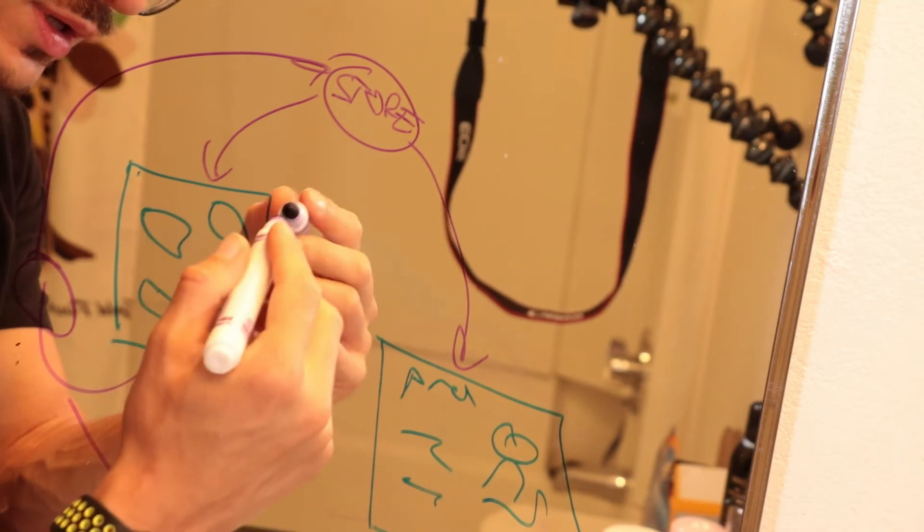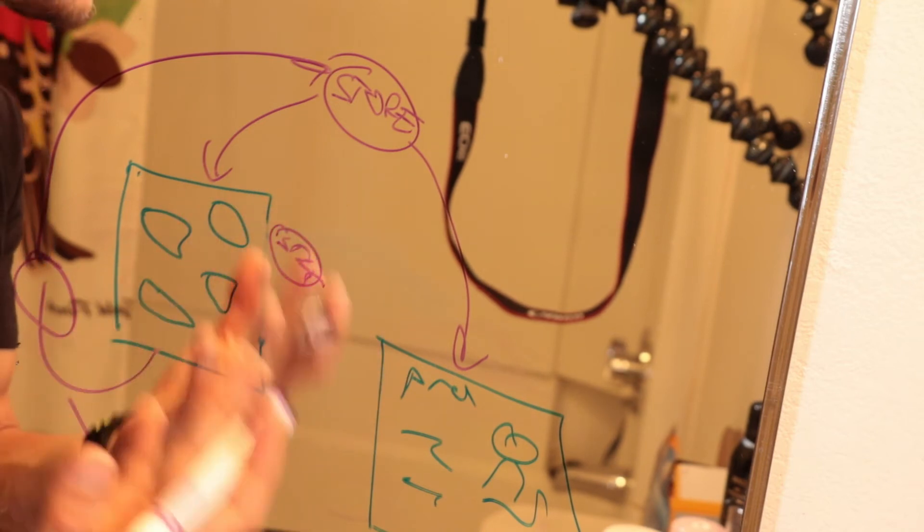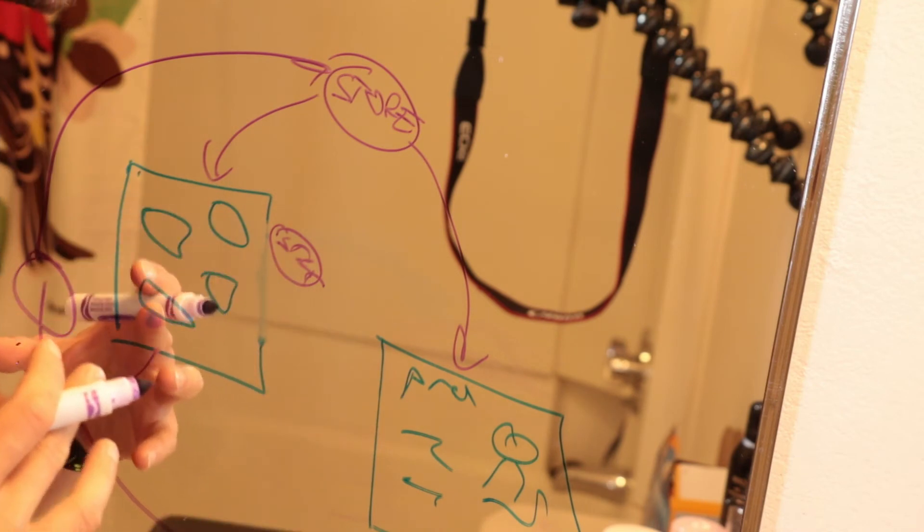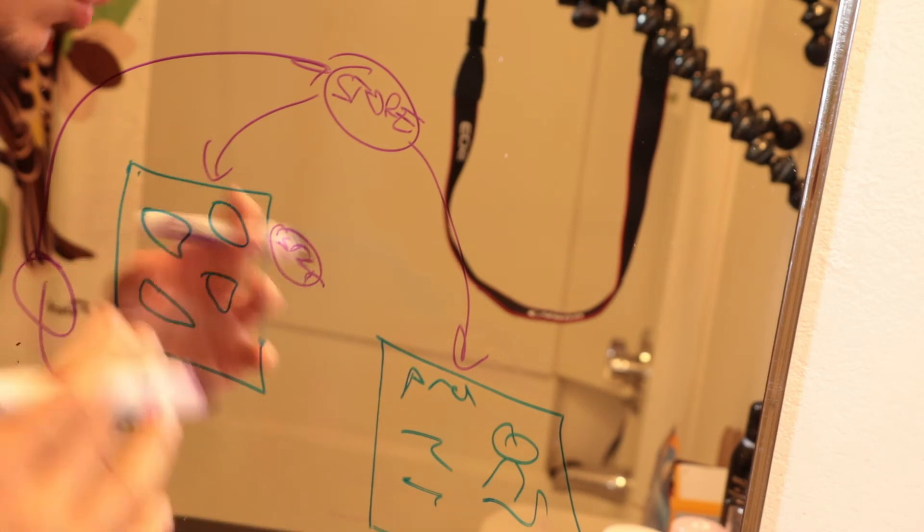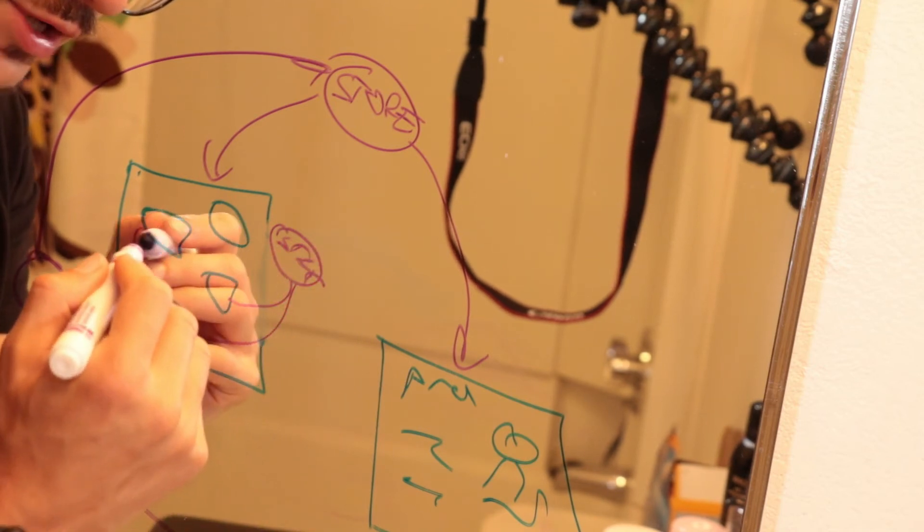What you should be doing is that you have another small store here. This could be either local state or something that you put in context. Maybe even a completely separate Redux state or Mobex store or whatever. And inside here your data goes in a single direction.